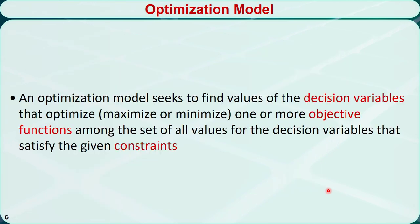An operations research model is usually referred to as an optimization model. It seeks to find values of the decision variables that optimize — either maximize or minimize — an objective function while satisfying given constraints. Therefore, each optimization model must consist of three components: decision variables, objective functions, and constraints.